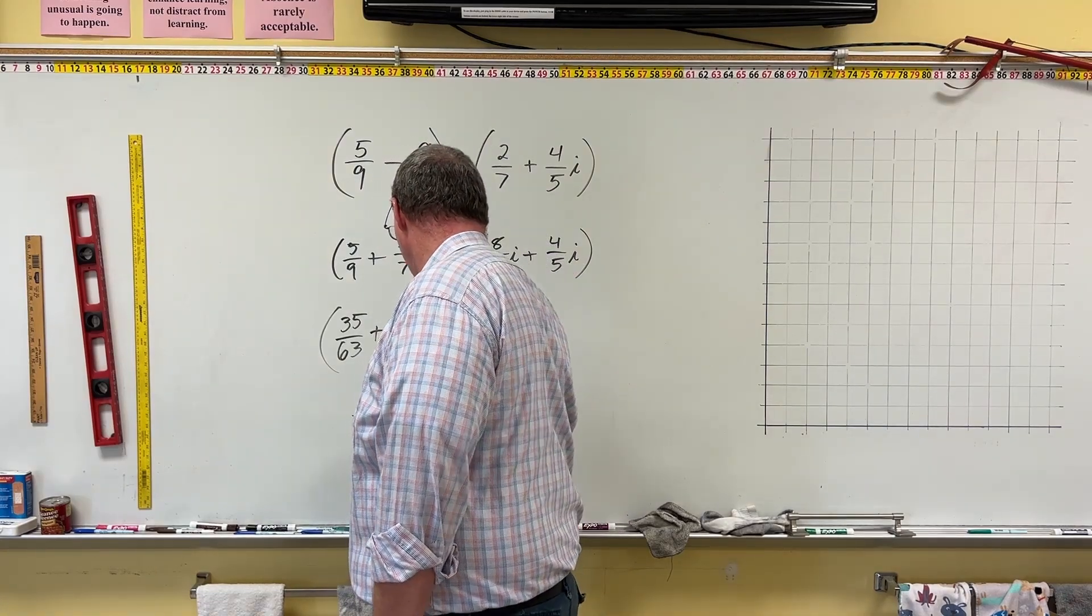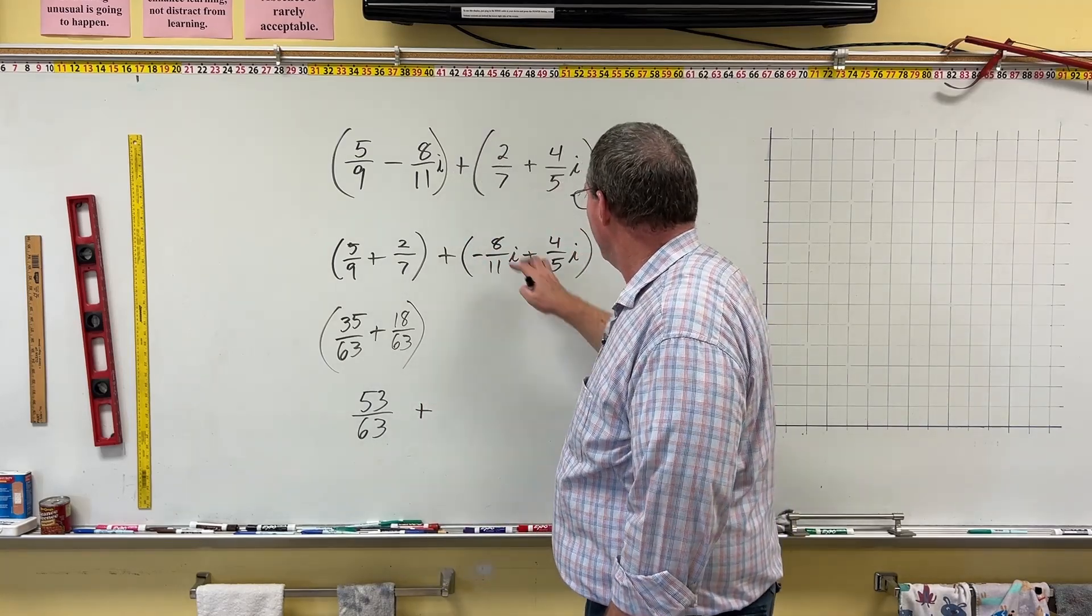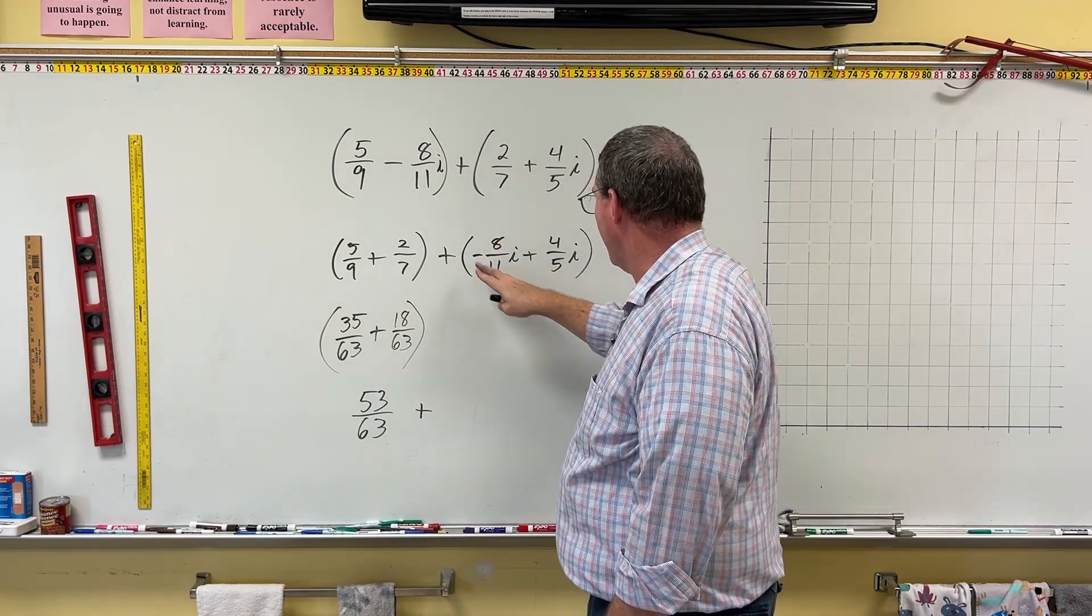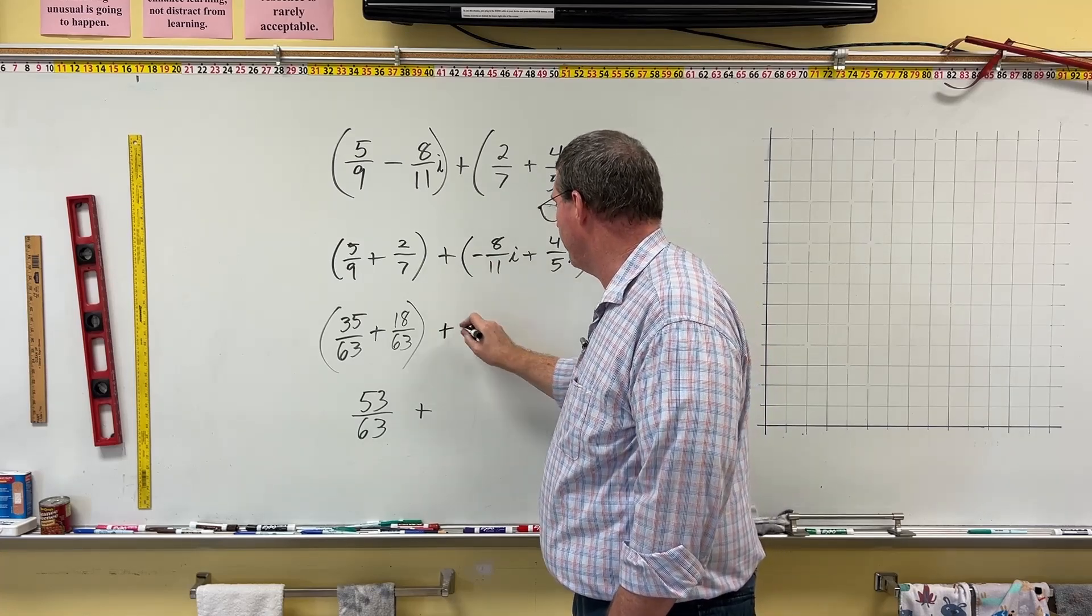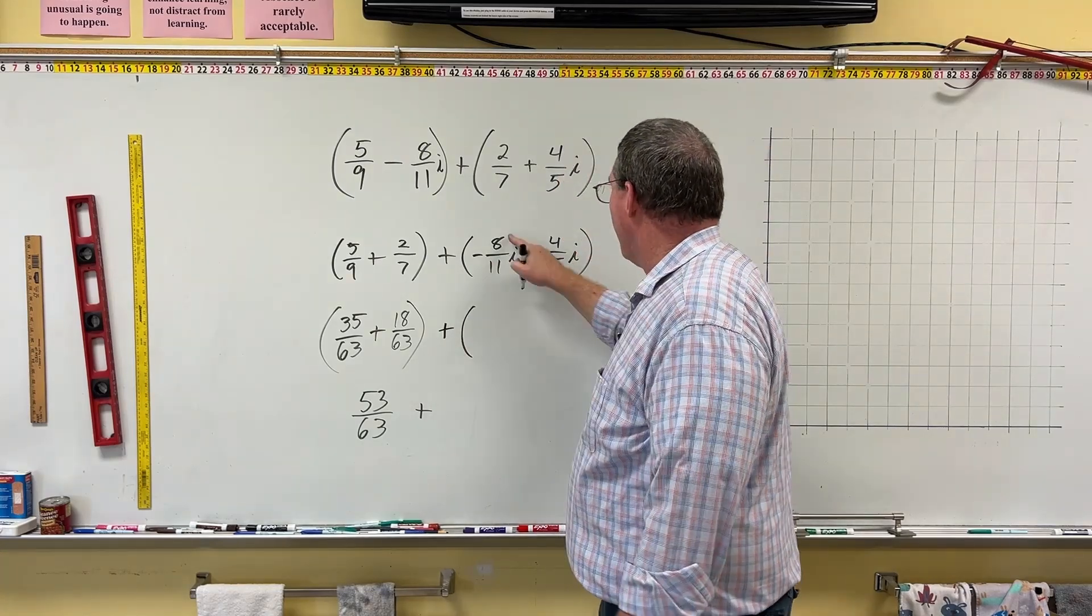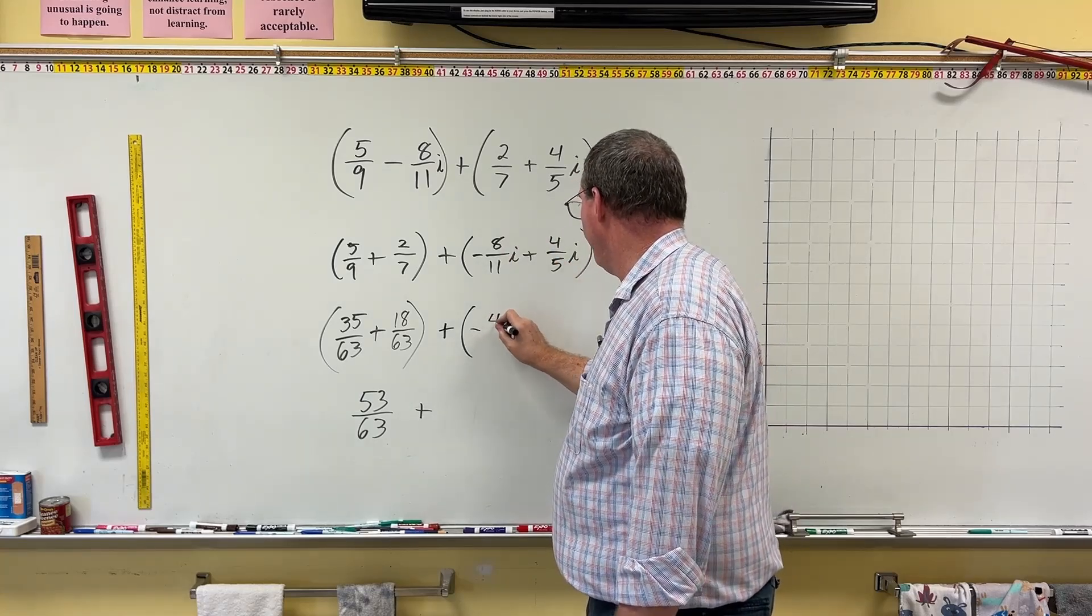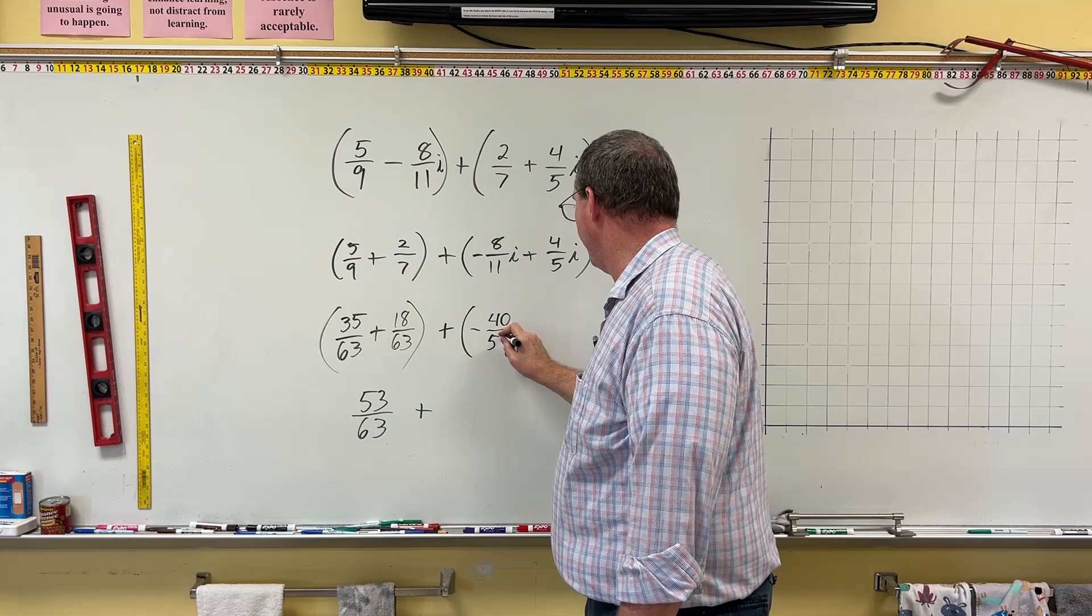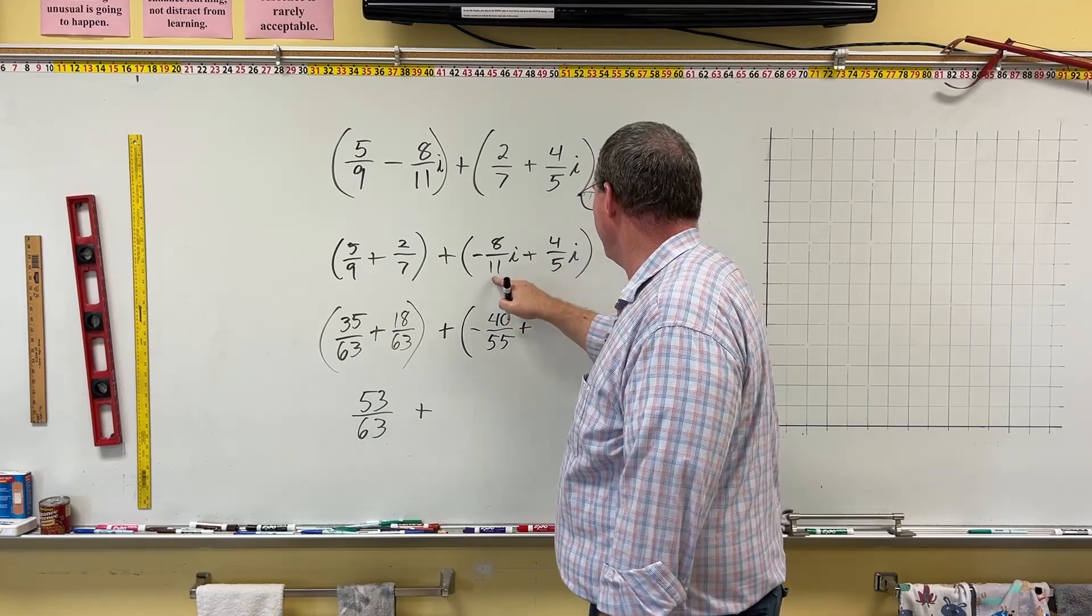Okay, good. Plus, over here, we've got to convert this negative 8 over 11. The negative is just going to go along for the ride. Okay, so we'll put plus here. The 8 and the 11 have to be multiplied by 5. So, 5 times 8 is 40, so it's negative 40 over 5 times 11 is 55,